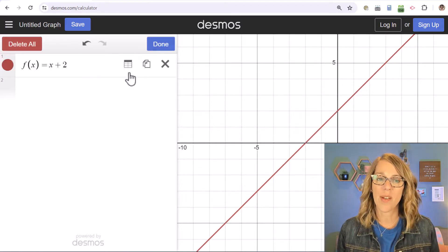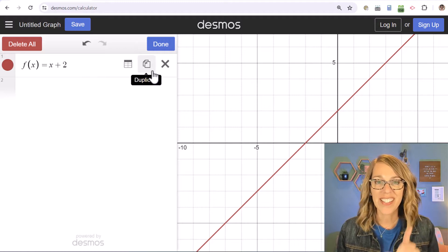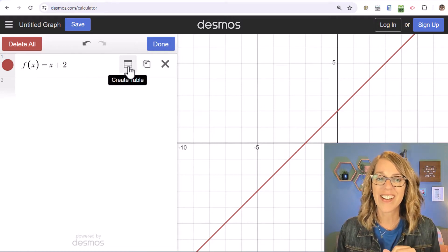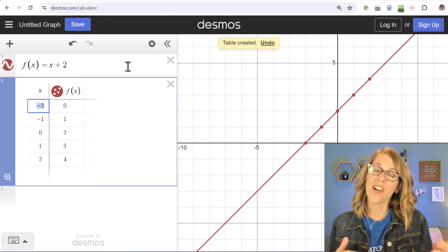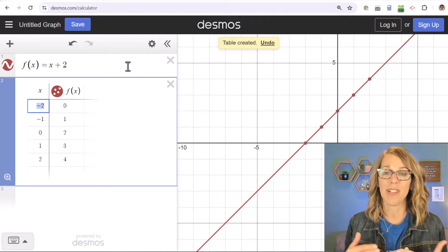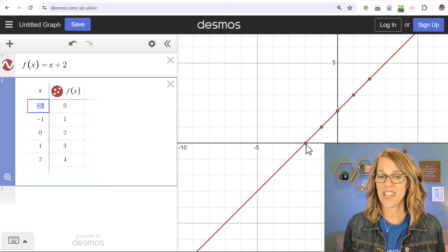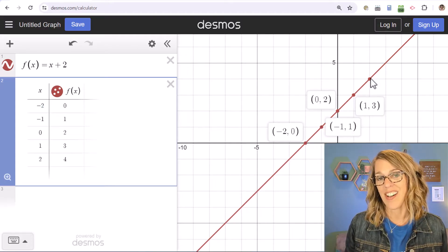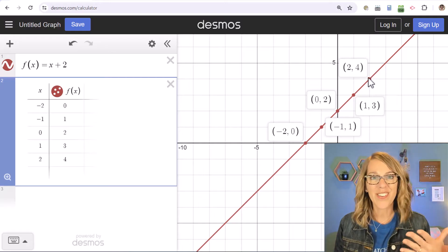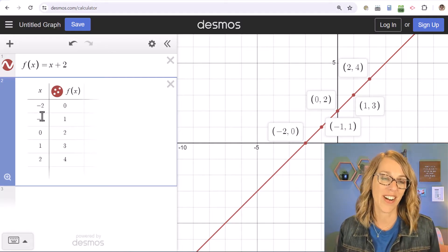I'm going to click on that, and you've got a couple of options over here next to your function. You're going to click on create table and it changes your function into a table of values. Notice over here, it also gives you the points on the table on your line, so you can click on those to see what the coordinates are.